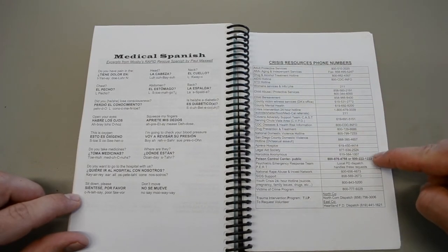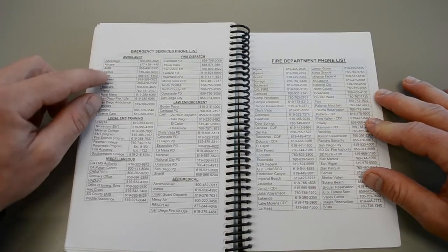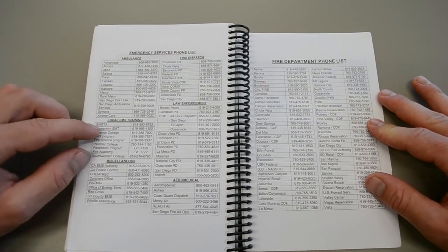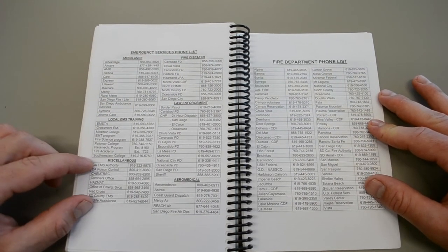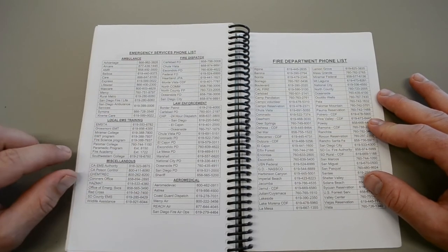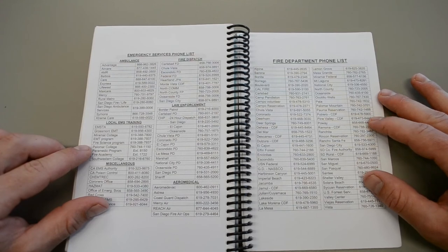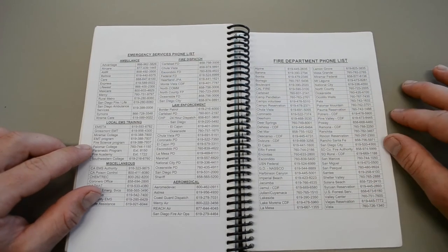Crisis resource numbers. Emergency services. Phone list. All the different ambulance services. Local EMS training. There's us. Miscellaneous. Law enforcement. Fire dispatch. Aeromedical. These are the air ambulances I was talking about. And then we also have the fire department phone list. All of these bolded hospitals are base hospitals.